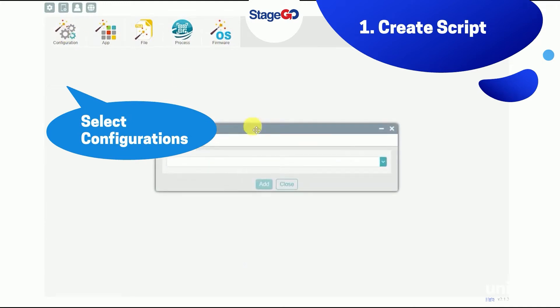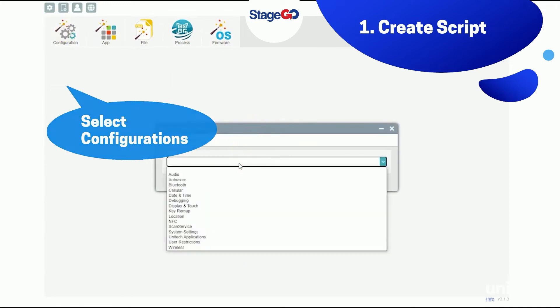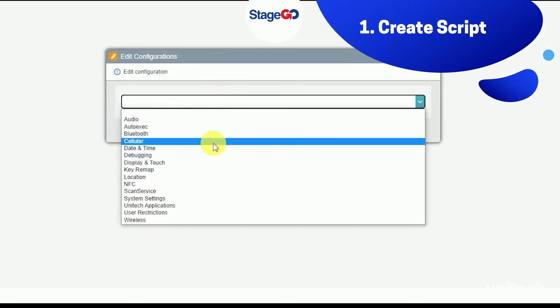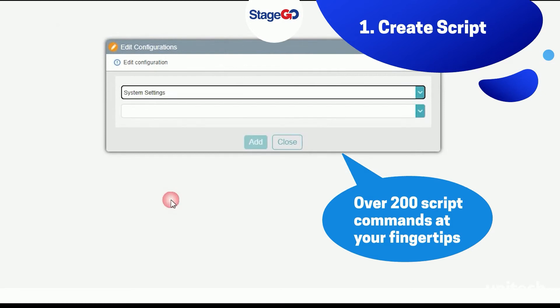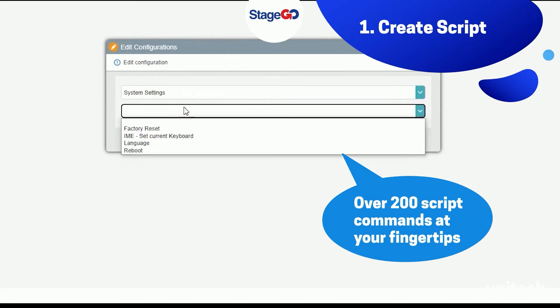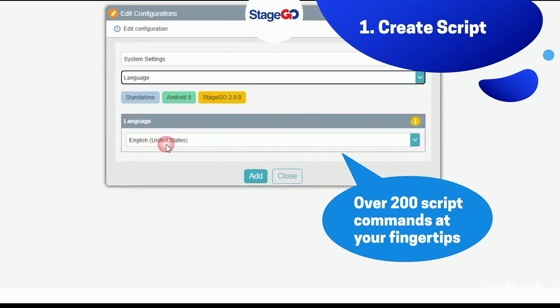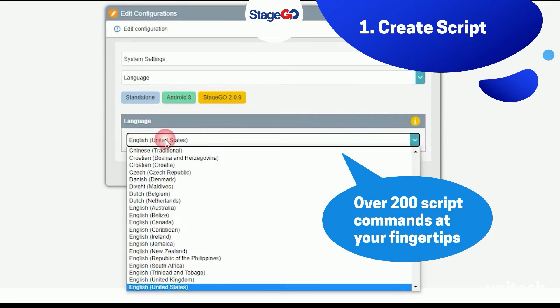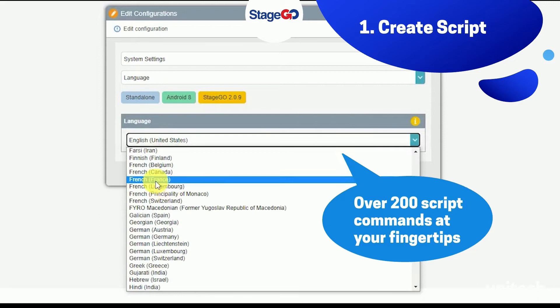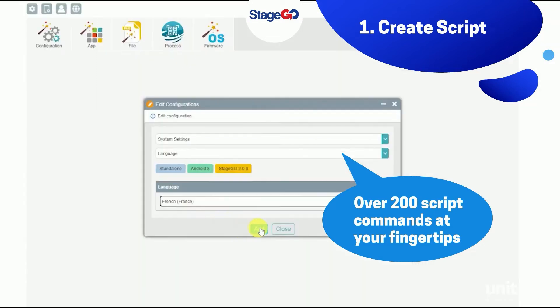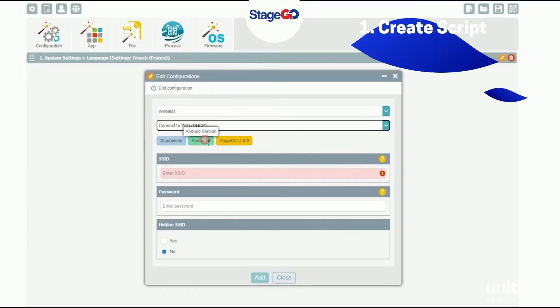Over 200 script commands at your fingertips. Now, let's try to set up the language. In the System Settings, click Language and choose the language for your devices.